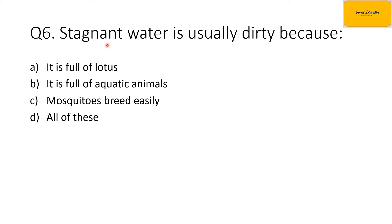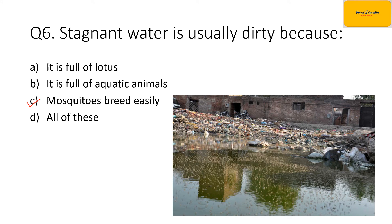The sixth question is: stagnant water is usually dirty because — option A, it is full of lotus; option B, it is full of aquatic animals; option C, mosquitoes breed easily; or option D, all of these. The correct option is option C. Stagnant water is usually dirty because mosquitoes breed easily in stagnant water. Mosquitoes cannot lay eggs in flowing water because the water keeps moving and washes their eggs away, but in stagnant water their breeding process happens very easily.